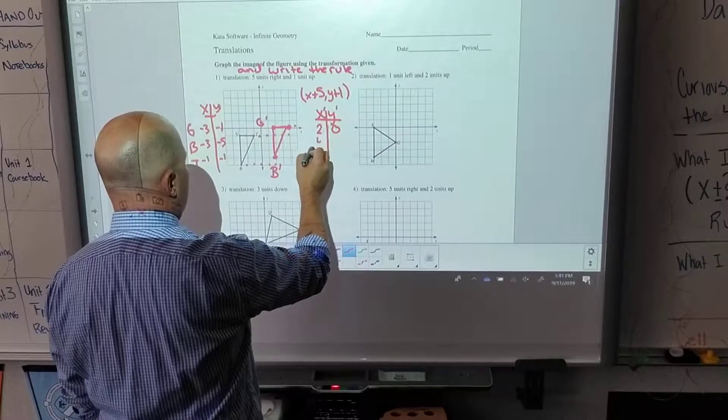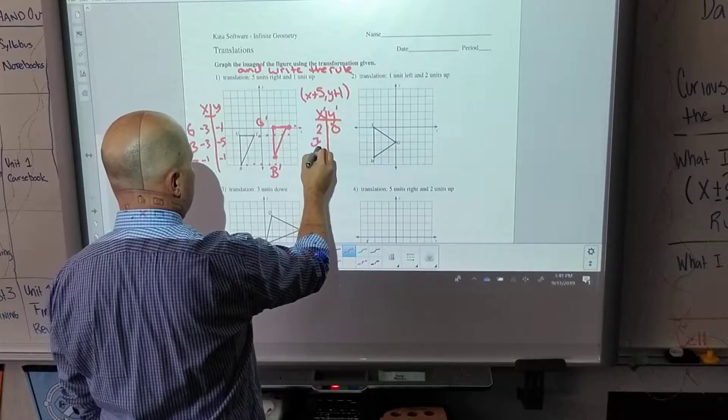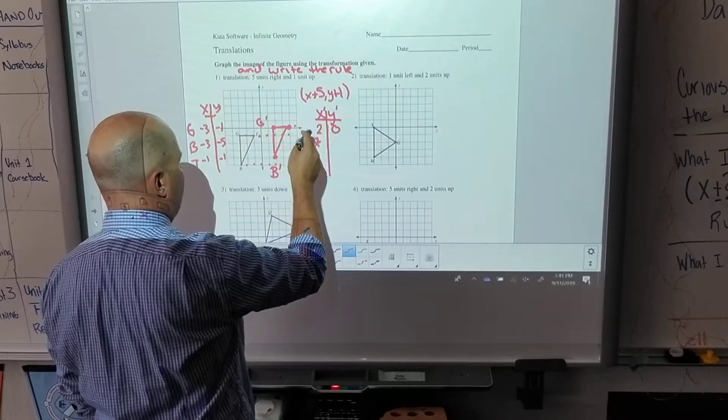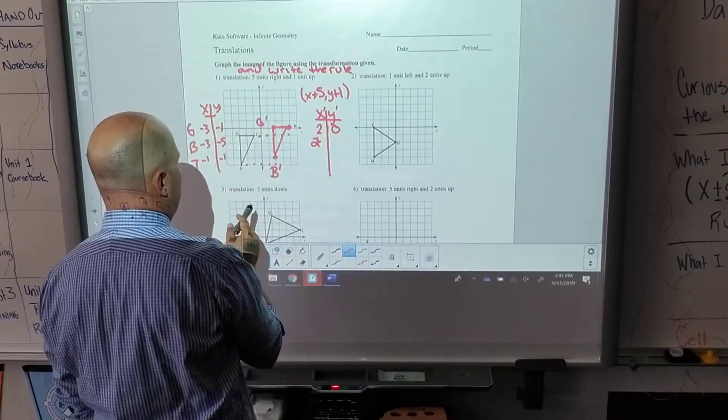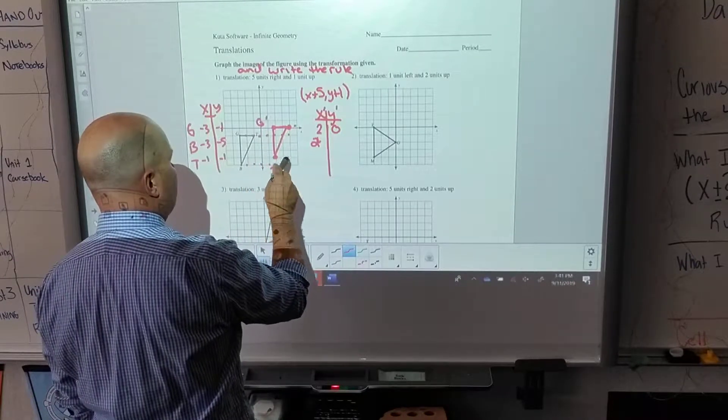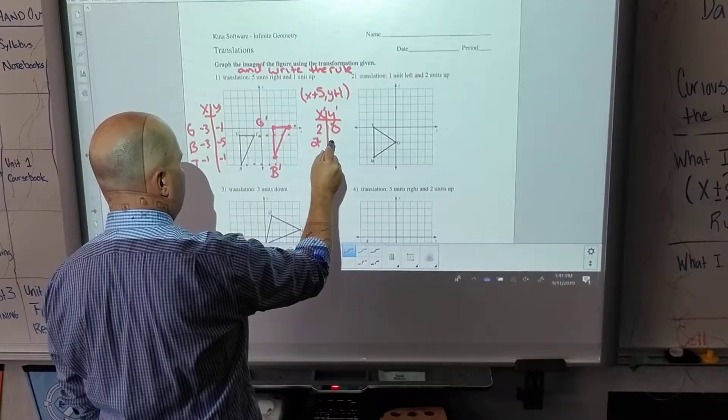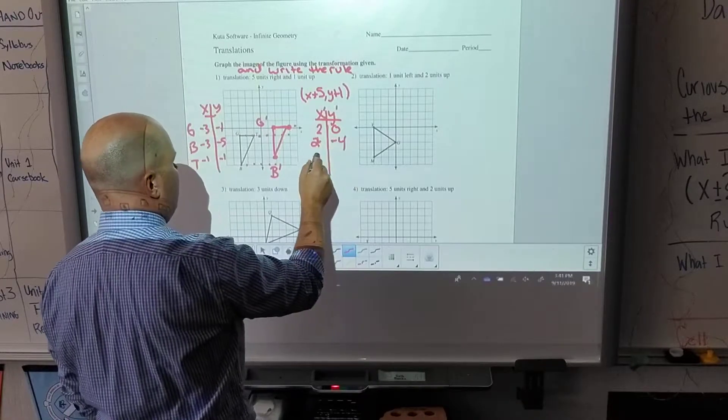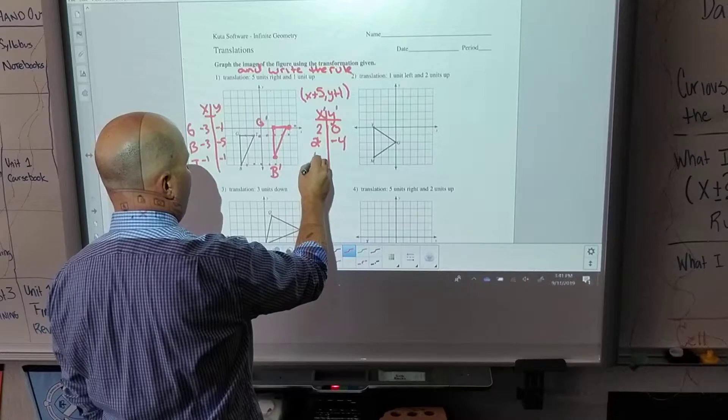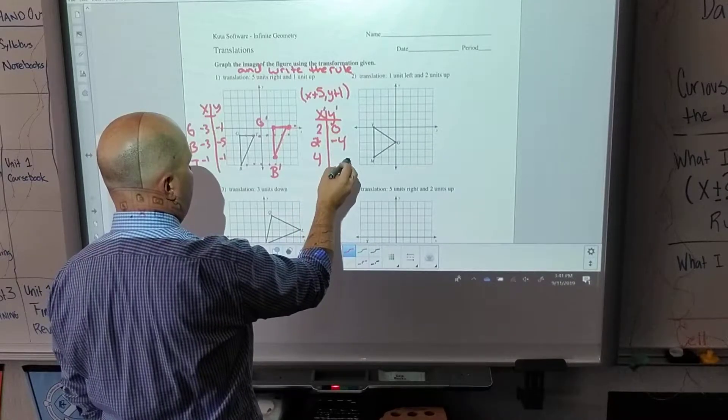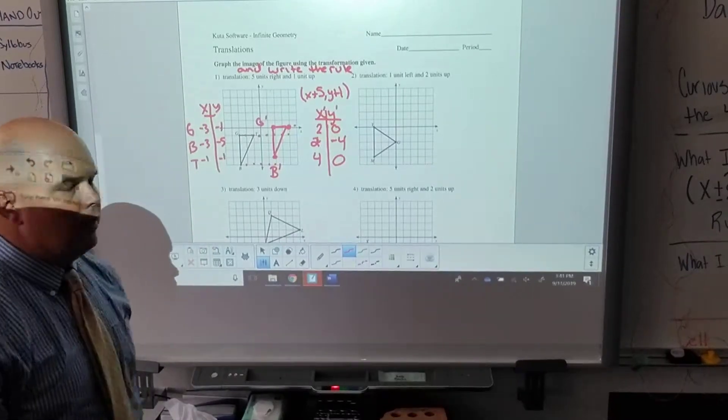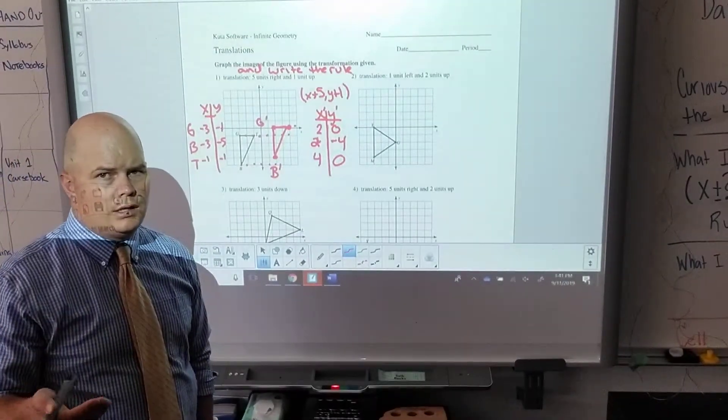B would be at two because negative three plus five is two, negative five plus one is negative four. And then last but not least, T would be at four, zero.